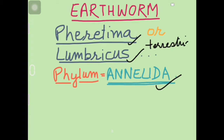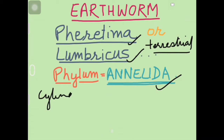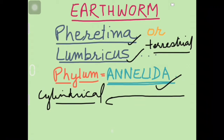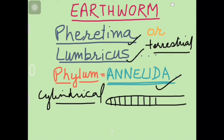Zameen pe rehne waala. Aur cylindrical iski shape hoti hai. Bohut saari segments milti hai earthworm mein. Yeh iski pehchan hai, yani metameres. More than hundred metameres in one animal can be found.